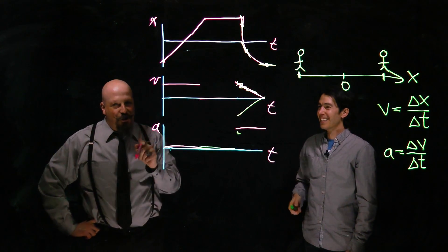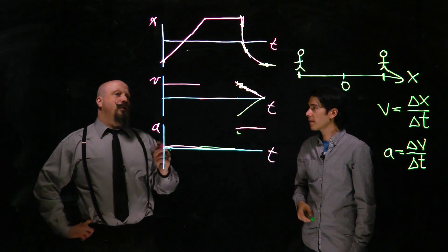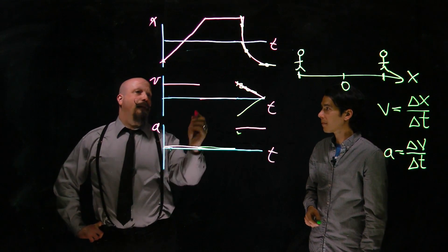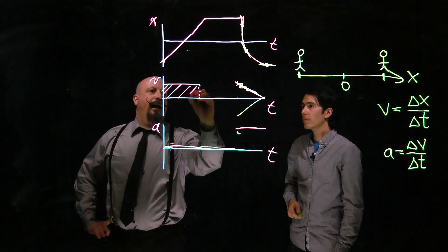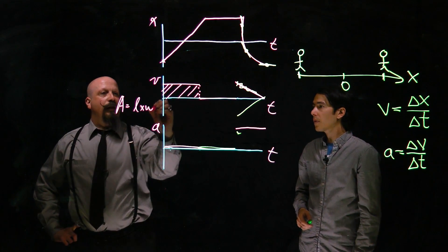Now, that's what the slope tells you. There's also information that can be taken away from what the area under the curve gives us. So here we have velocity versus time. I can look at the area underneath this curve. And so that area is of a rectangle. It's just length times width.